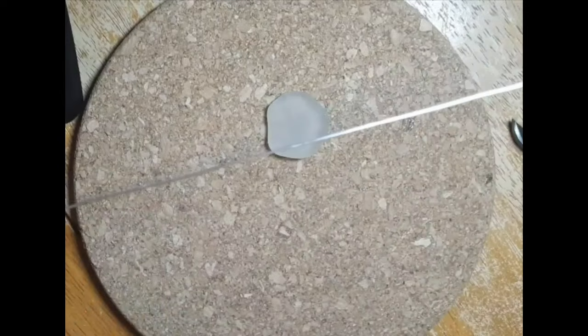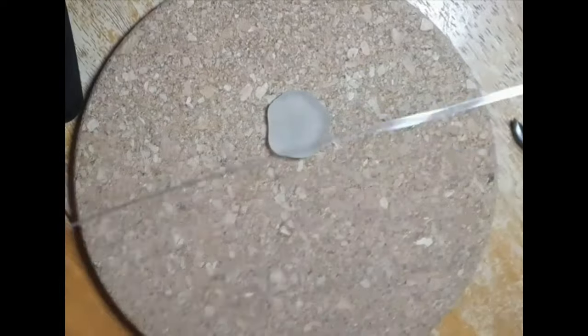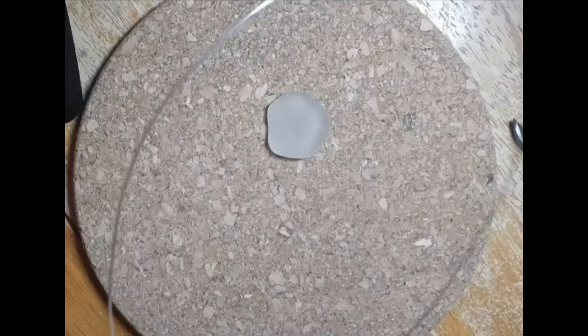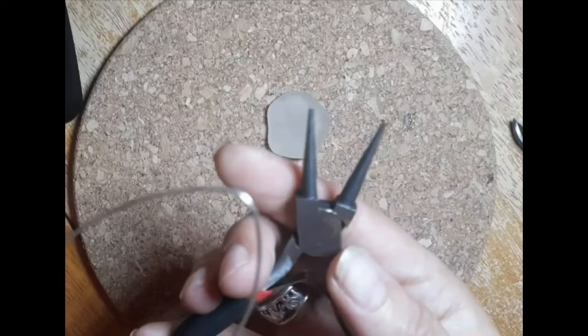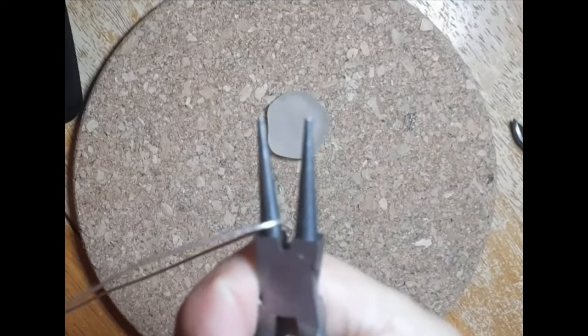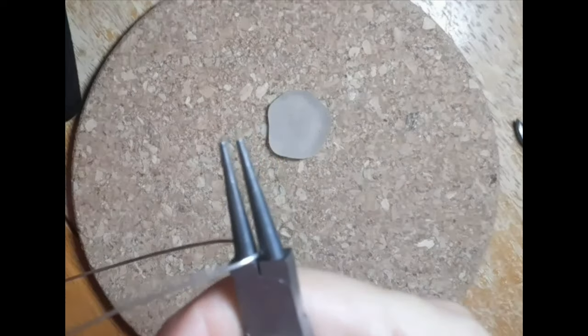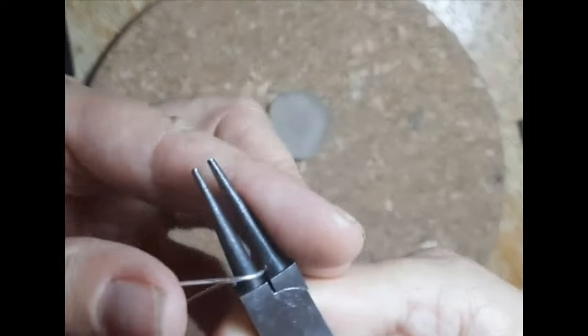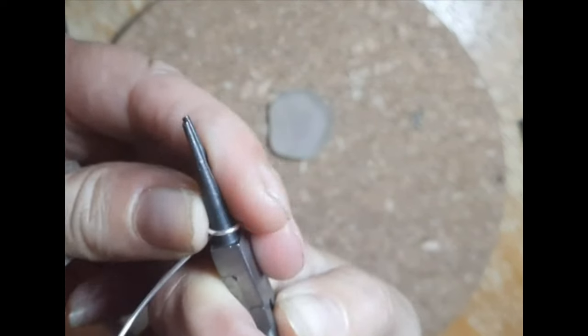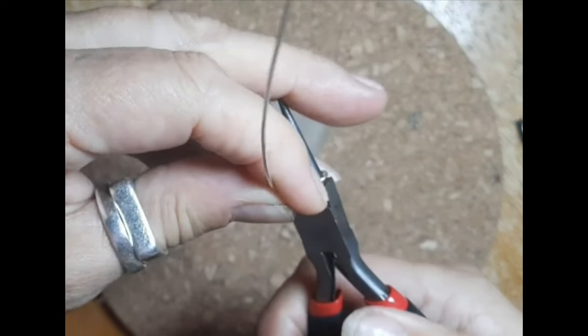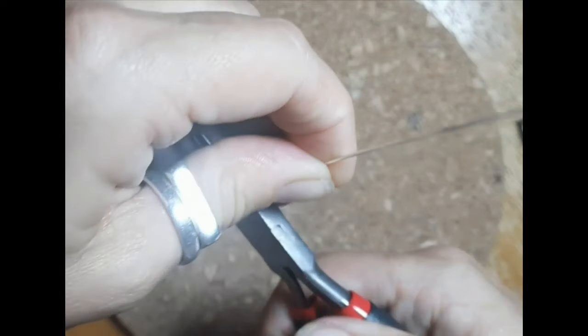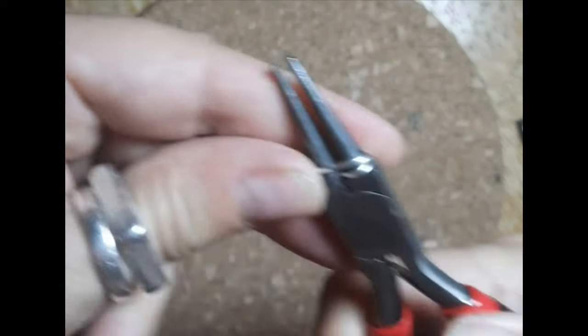Straighten and harden the wire a little bit by smoothing it out, then find the center. Take your round nose pliers and roll the wire around the pliers, and I do this about three times.